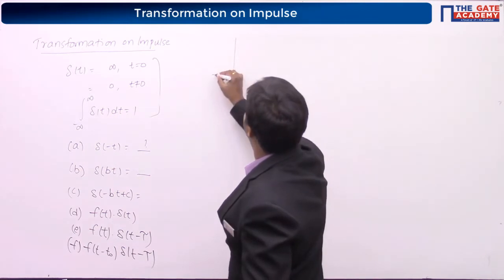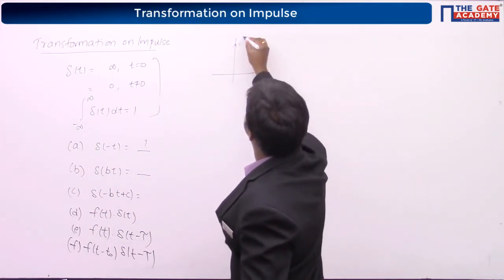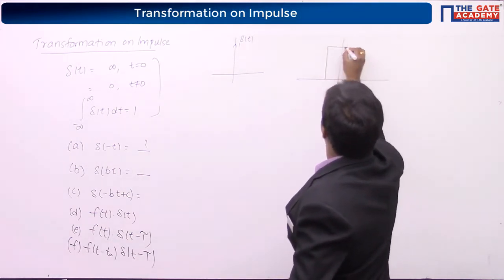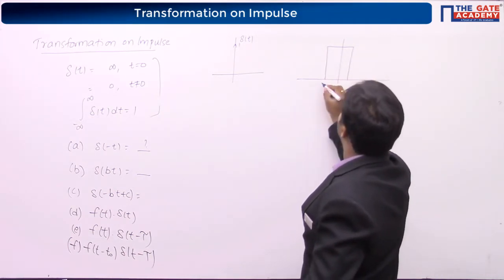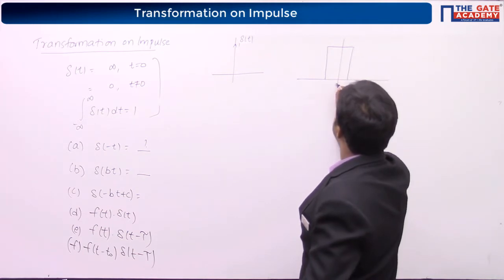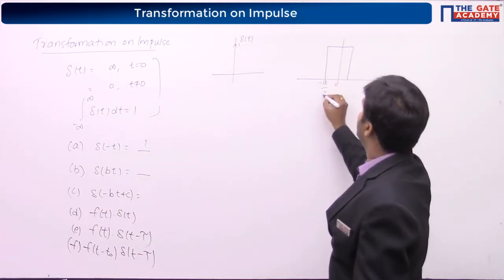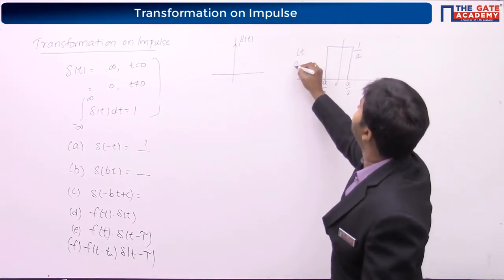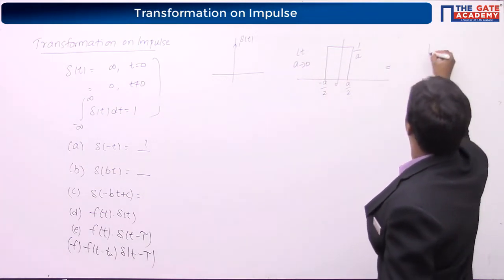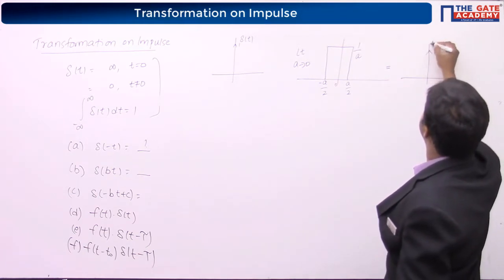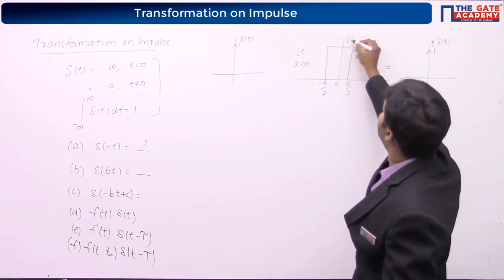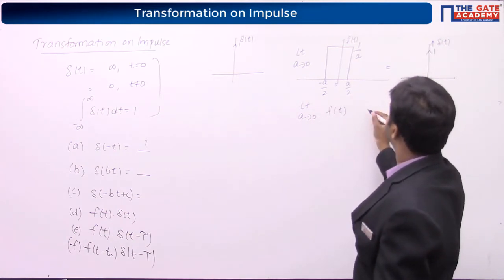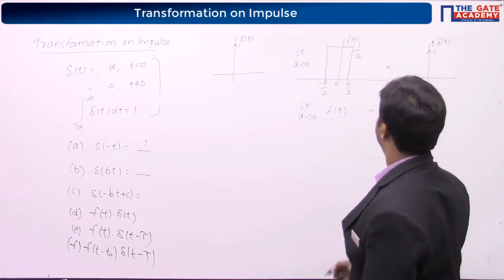If we are talking about an ideal impulse, the practical impulse will be a rectangle from minus a/2 to a/2 with amplitude 1/a. As the limit a tends to 0, this is equivalent to the impulse. Let us call this particular signal as f(t), so limit a tends to 0 of f(t) is equal to del(t).